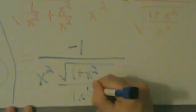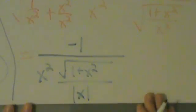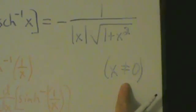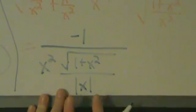Unfortunately, this time we can't drop the absolute value signs — unlike in the last video. The reason is that the only restriction we have is x cannot be 0, but x could be positive or negative. Because x could be negative, we have to leave the absolute values in. This came from the square root of x squared, which by definition equals the absolute value of x.